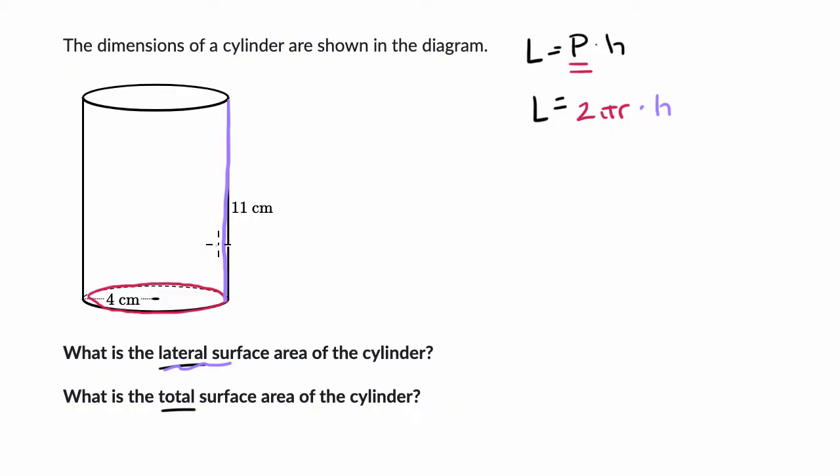Now, before I even calculate this, let's just make sure that that makes sense. How does this formula actually work? I'm a big fan of not just memorizing formulas, but really thinking about why it's intuitive. Imagine if you were to cut this roll, or the cylinder right over here, and then you were to open it up and flatten it out, what would it look like?